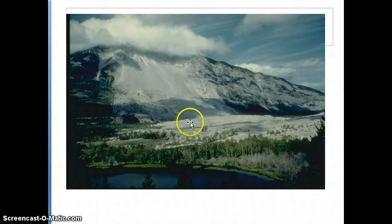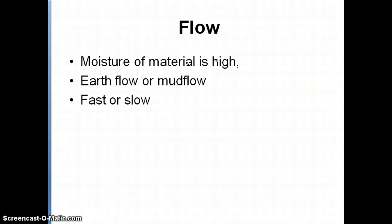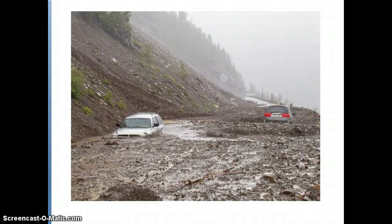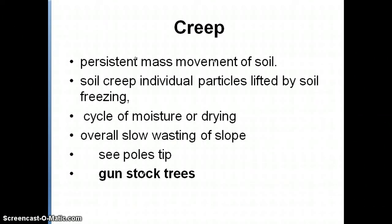A couple of other types of mass movements are flows. Landslides are typically dry, whereas a flow has a lot of moisture in it — you can get earth flows or mud flows, and they are very fast. Here's an example of a mud flow down a slope, which speaks for itself — very fast, very wet. Another type of mass movement is called creep, which involves long-time, almost soil-particle-by-soil-particle movement down slope.